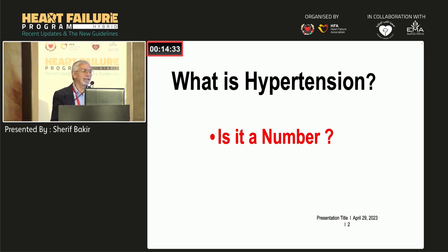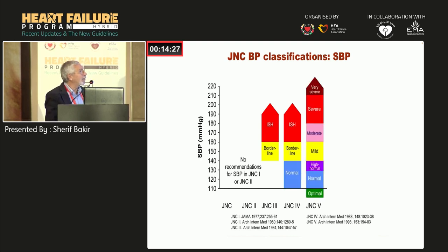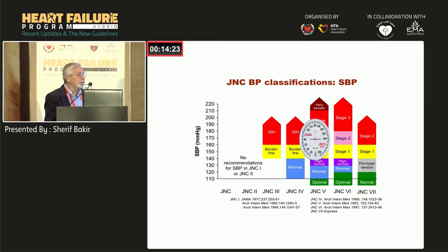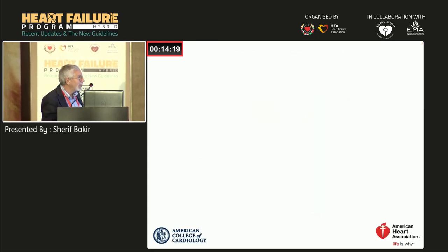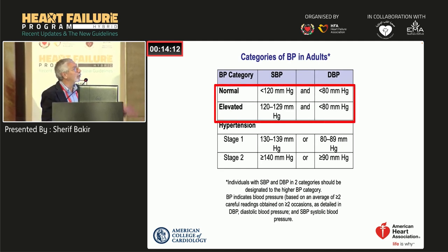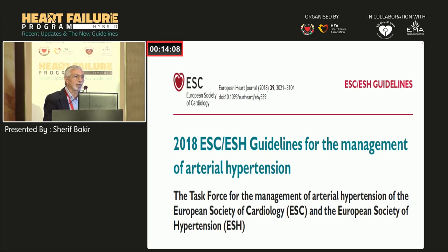We are looking for a number. If we go from the Joint National Committee guidelines up till now, they have changed the number hundreds of times — because we don't know exactly what the blood pressure number should be. The American Heart Association and American College of Cardiology 2017 gave one number, and then the Europeans one year later gave a different number, but all of them put it in the context of risk.